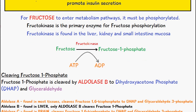Here we have the reaction of fructose into fructose-1-phosphate. The enzyme used is fructokinase and the phosphate group comes from ATP, so ATP is converted into ADP and the phosphate group is added onto fructose to form fructose-1-phosphate.